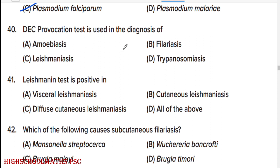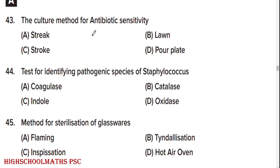DEC provocation test is used in the diagnosis of option B: filariasis. Leishmanin test is positive in option B: cutaneous leishmaniasis. Which of the following causes subcutaneous filariasis? Option A: Mansonella streptocerca.